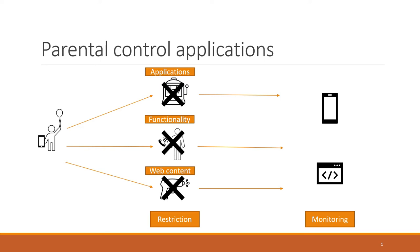Parental control applications, by their own design, need to access a lot of sensitive resources in order to provide their functionality. But not only that — in the case of monitoring applications, this information will later travel across the internet in order to be accessed by parents on different devices. Therefore, what we do in this paper is take a look at parental control applications and what are the security and privacy risks for children and parents.